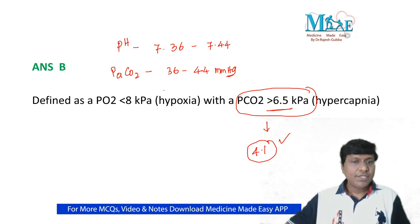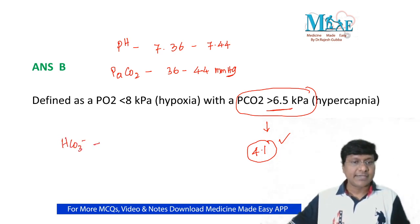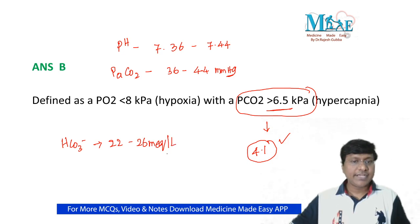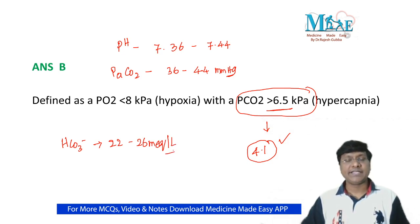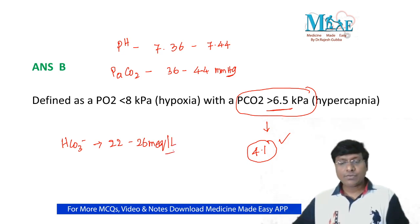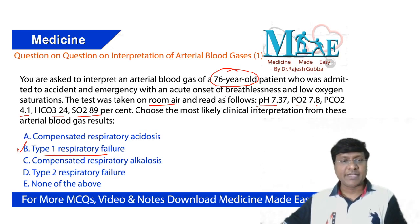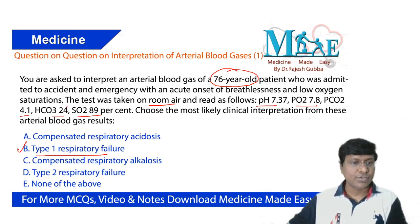The normal bicarbonate levels are 22 to 26 milliequivalents per liter. The bicarbonate level of this patient is 24, which means it is normal.